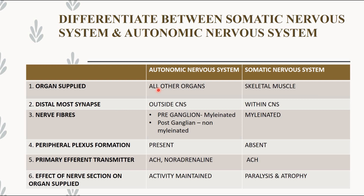This is the differentiation between the somatic nervous system and autonomic nervous system, based on organ supplied, distal-most synapse, nerve fibers, peripheral plexus formation, primary efferent transmitter, and effect of nerve section on organ supplied. ANS is present in all organs while somatic is specific to skeletal muscle. ANS synapse is outside CNS; somatic is within CNS. ANS has pre-ganglionic myelinated and post-ganglionic non-myelinated fibers; somatic is myelinated. Peripheral plexus formation is present in ANS, absent in somatic. Main neurotransmitters: ANS uses acetylcholine and noradrenaline; somatic uses only acetylcholine. On nerve section, ANS activity is maintained with no atrophy, whereas somatic shows paralysis and atrophy.